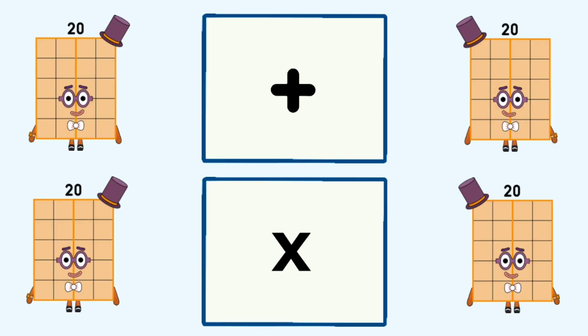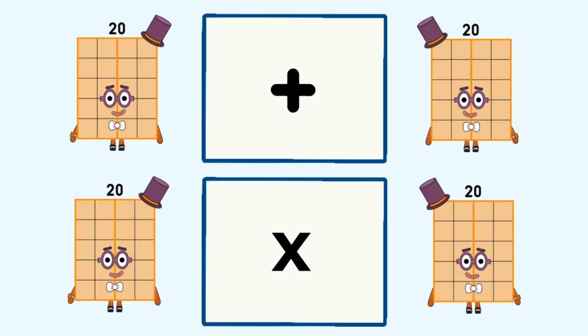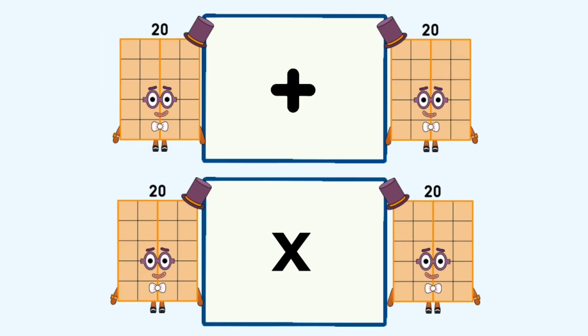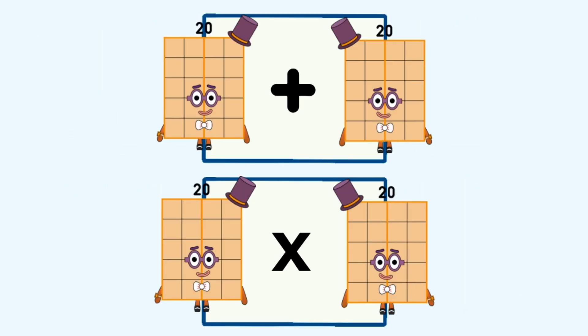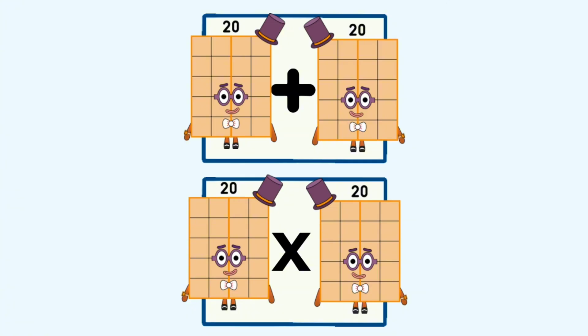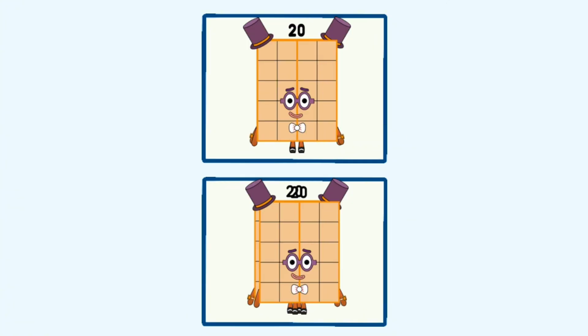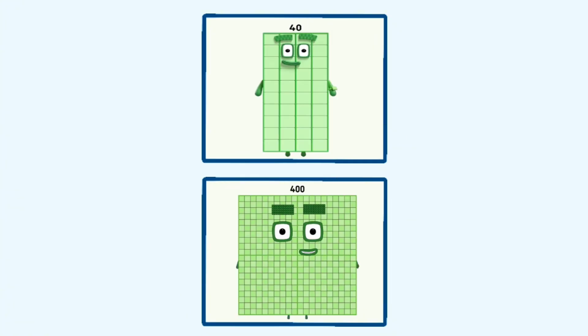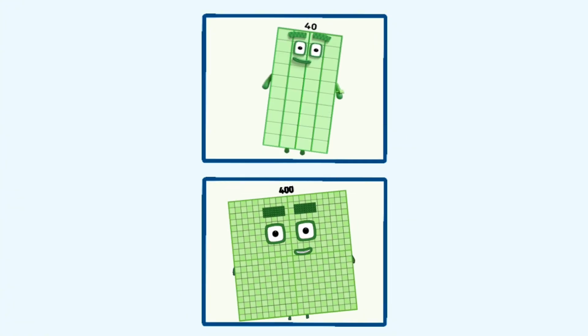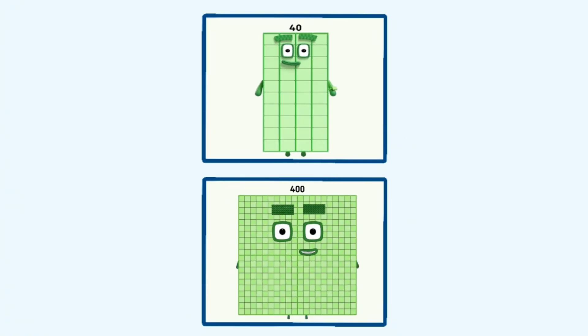20 plus 20 and 20 times 20 equals 40 and 400.